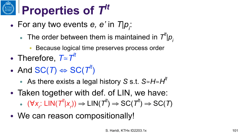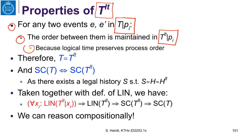Let's look at the properties of the logical time trace. If we restrict the real-time trace to the view of each process Pi, we can see that the order between events is maintained in the logical time trace, because logical time preserves process order. So the logical time trace preserves process order, and therefore the logical time trace and the real-time trace are equivalent according to the definition of equivalence. The view of each process is the same in T and in TLT.